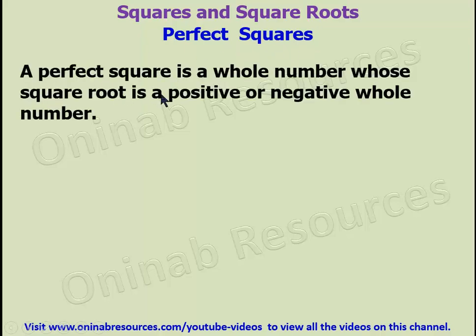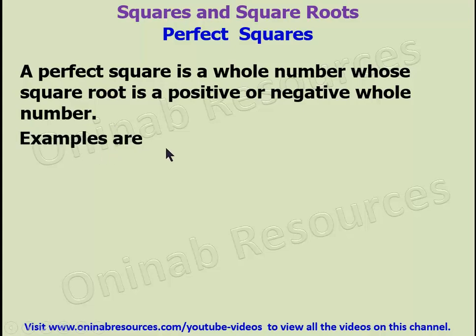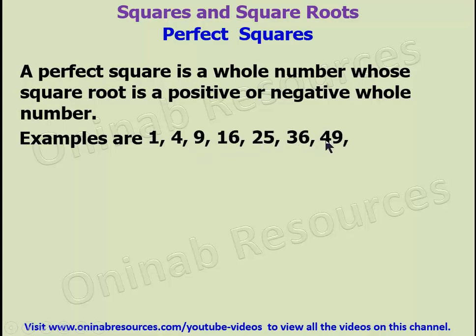A perfect square is a whole number whose square root is a positive or negative whole number. Examples are 1, 4, 9, 16, 25, 36, 49, 64 and so on.